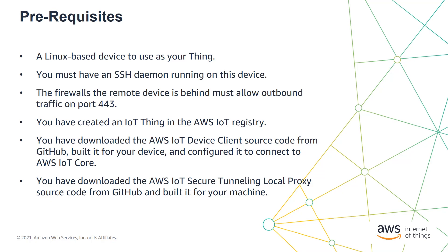AWS IoT Device Client has the AWS IoT Secure Tunnelling Local Proxy baked in. It just makes it easy to get started with several AWS IoT Device Management and AWS IoT Device Defender features, but it's not required for using the Secure Tunnelling feature in general. To follow the demo, you'll need to have downloaded the AWS IoT Device Client source code from GitHub, built it for your device, and configured it with the appropriate thing name, certificates, and private key. We've provided a link to the GitHub repository in the video description. You'll also need to have downloaded the AWS IoT Secure Tunnelling Local Proxy source code from GitHub and built it for your machine. We've also provided a link to that repository in the video description.